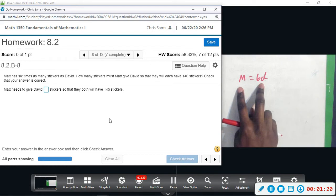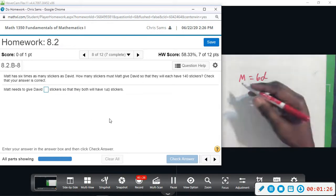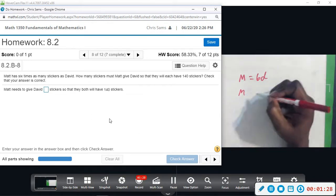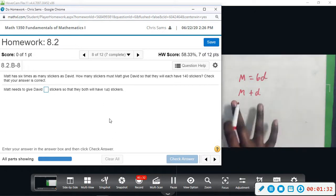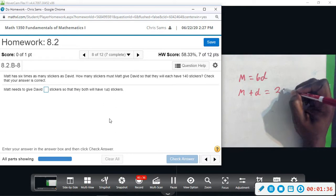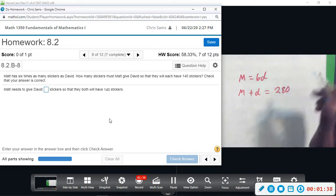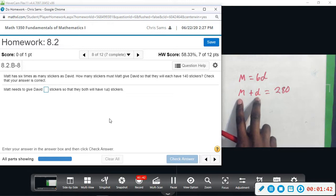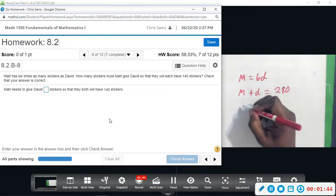Okay, so Matt plus Dave, if they're going to have 140 each, 140 twice is going to give us 280. This is how much we would have. So we need to figure out how much they have now. We have that Matt is equal to six times Dave, so 6D plus D equals 280.